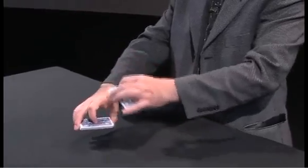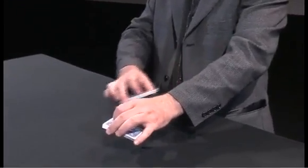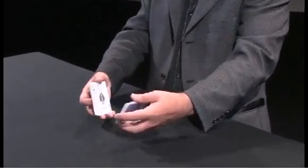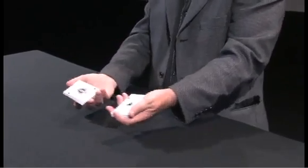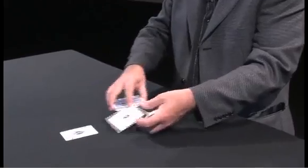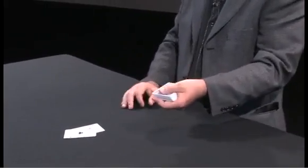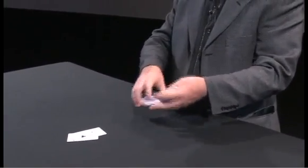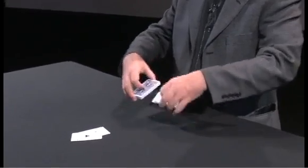Two aces appearing at the faces of the packets. I don't have four hands, so it's impossible to keep doing this, but I could rub this red ace against my jacket and this red ace against my jacket. And yes, they both change instantly into the two black aces. One, two.